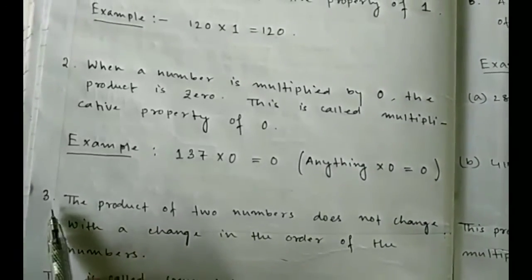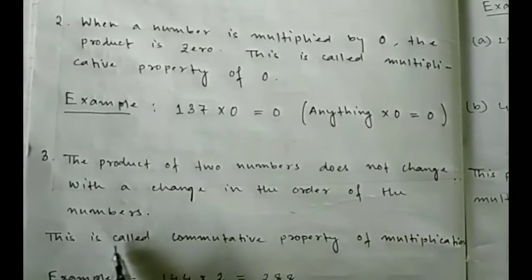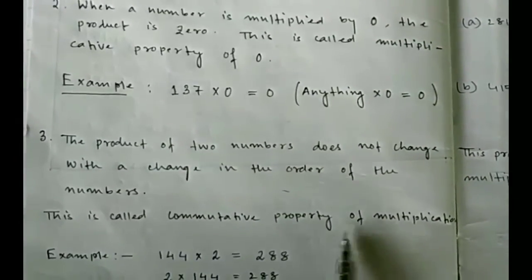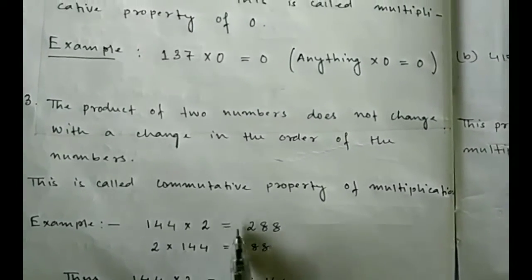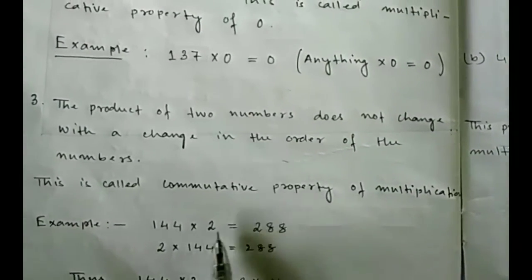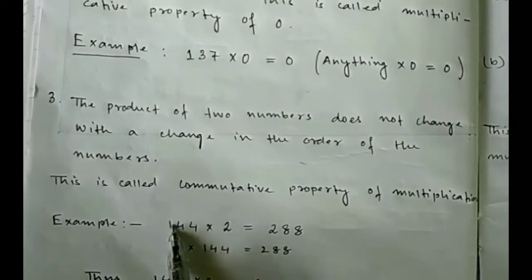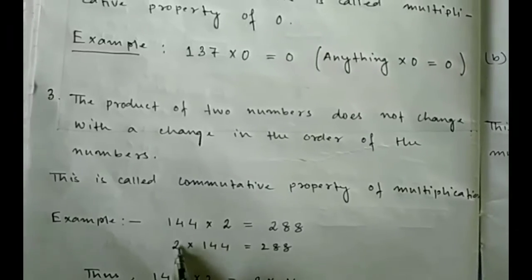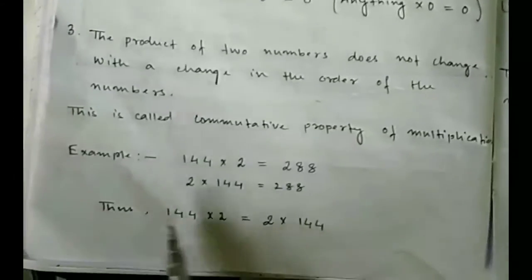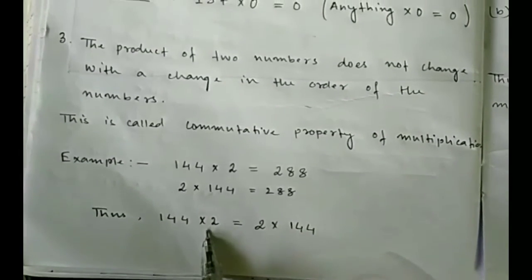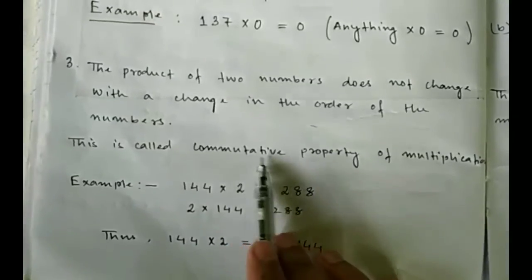Third property: the product of two numbers does not change with a change in the order of the numbers. This is called the commutative property of multiplication. For example, 144 into 2 is equal to 288. If we change the order and write 2 into 144, it is also 288. That means 144 into 2 is equal to 2 into 144.